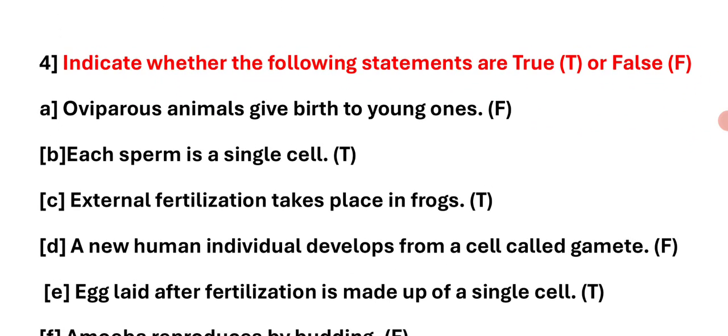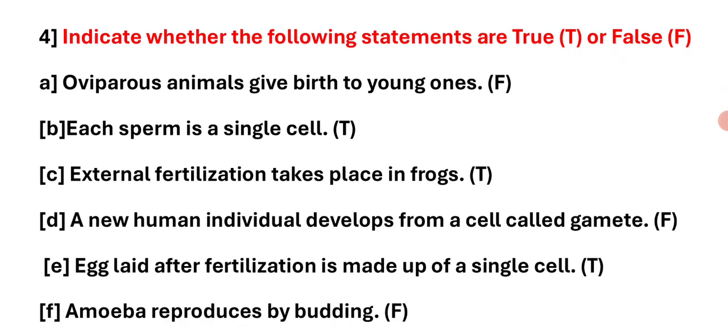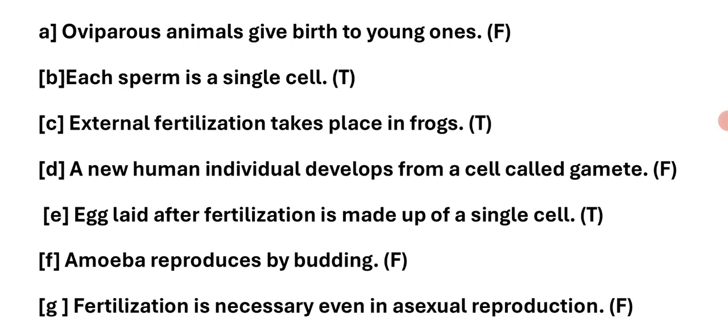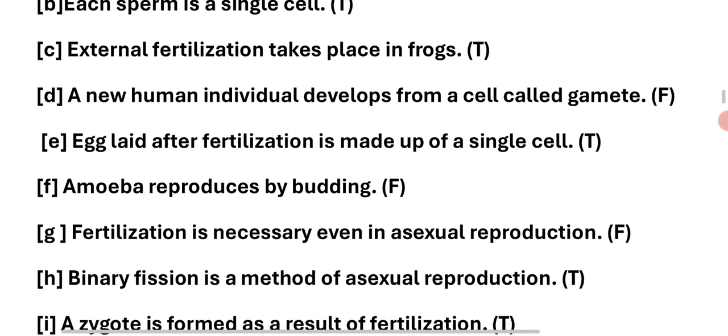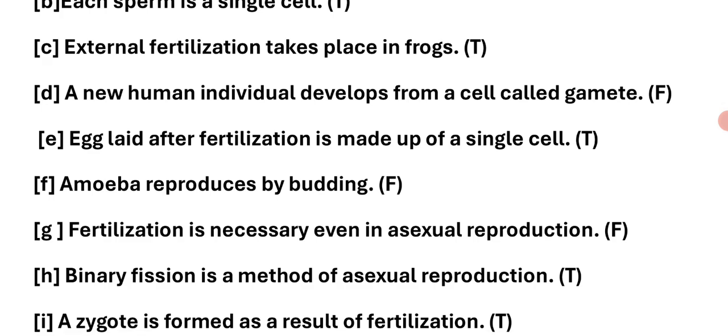Question number 4: Indicate whether the following statements are true or false. Statement 1: Viviparous animals give birth to young ones — this statement is false. Statement 2: Each sperm is a single cell — this statement is true. Statement 3: External fertilization takes place in frogs — this statement is true. Statement 4: Any human individual develops from a cell called gametes — this statement is false.